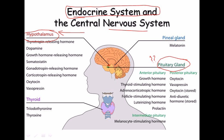The major endocrine glands are the pituitary gland, thyroid gland, adrenal gland, and pineal gland. The pituitary gland has two parts: the anterior pituitary and the posterior pituitary. The posterior pituitary is attached to the central nervous system and secretes oxytocin and vasopressin. The anterior pituitary secretes growth hormone, thyroid-stimulating hormone, adrenocorticotropic hormone, follicle-stimulating hormone, luteinizing hormone, and prolactin.